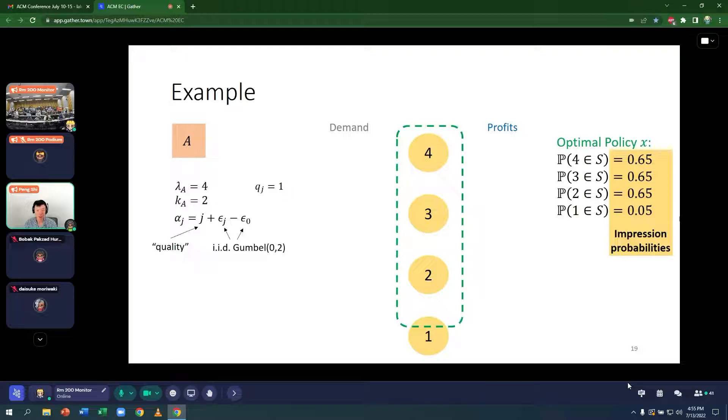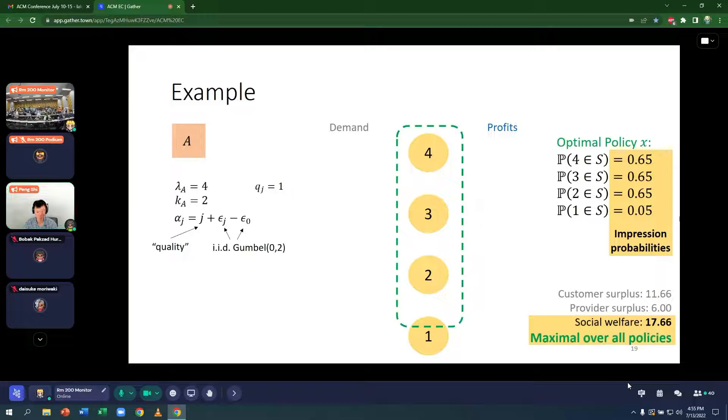Similarly, provider 2 and 3, while provider 1, which has quality 1, is recommended 5% of the times. And this is the induced surplus of customers, providers, as well as the total social welfare, which is maximal over all possible ways of recommending subsets of at most 2, the maximal over all policies.